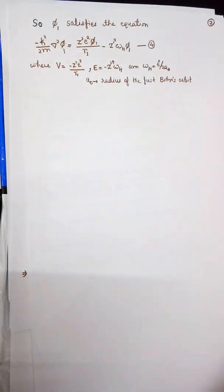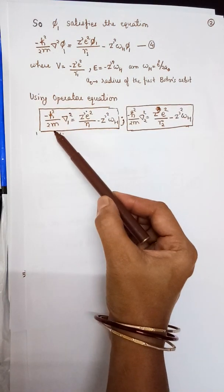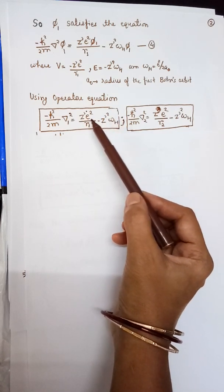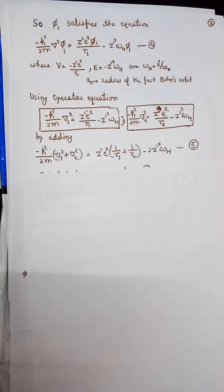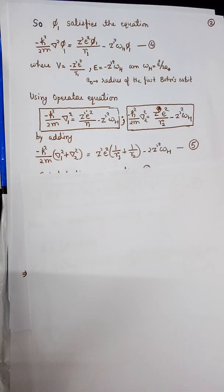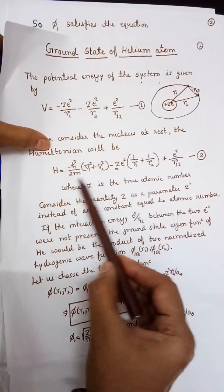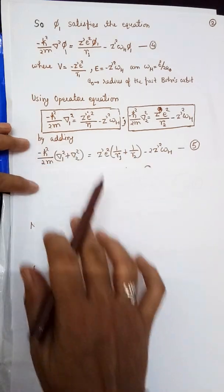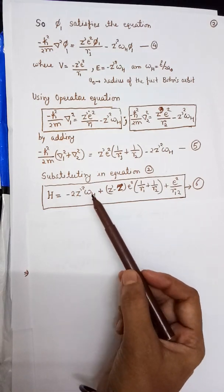Using the operator equation, we write: −(ℏ²/2m)∇₁²φ₁ = (Z′e²/r₁ − Z′²ωₕ)φ₁, and similarly for ∇₂². Adding these two equations gives the combined expression, which we substitute into the Hamiltonian. So the Hamiltonian of this problem becomes a sum of three terms.